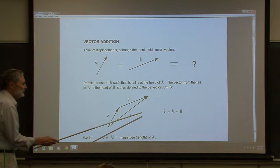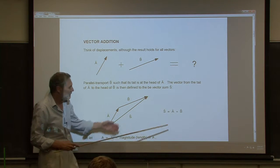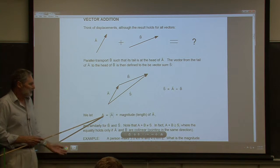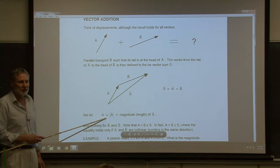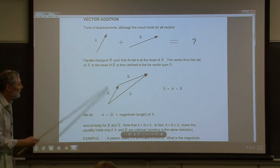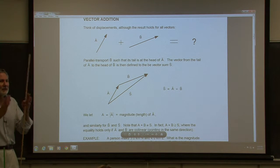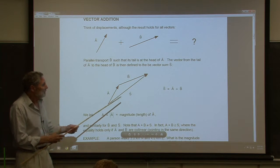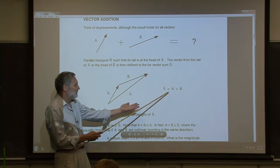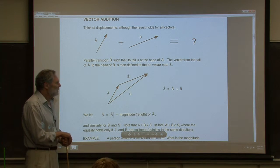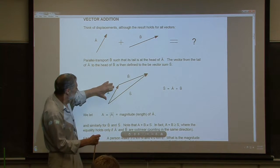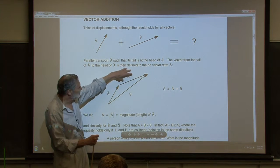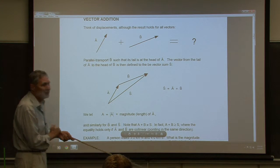You have to signify that these are vectors with arrows. Without the vector arrow, by convention that notation refers to the magnitude. These bars represent the magnitude — finding the length of the vector. The magnitude of A plus the magnitude of B is greater than the magnitude of S. So you need to be careful about that.